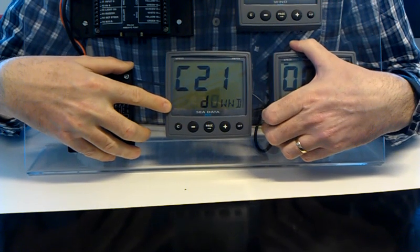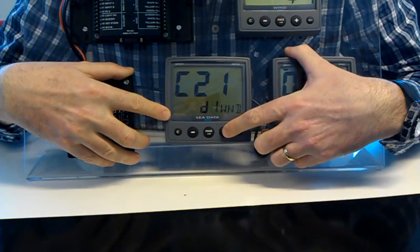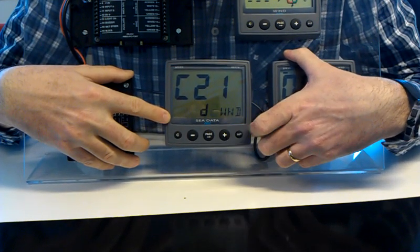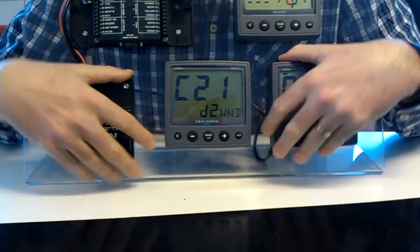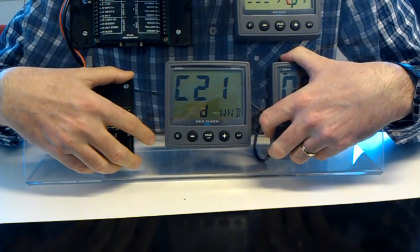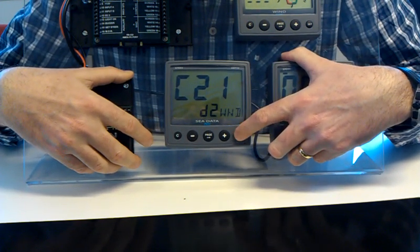So, all we do is press set. And then we can raise that up if we want. I'm going to choose D2 because I want a nice, slower average reading from the wind transducer. And again, I confirm that with set.